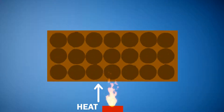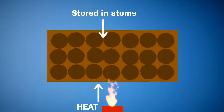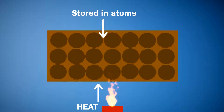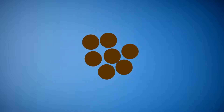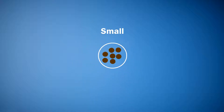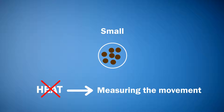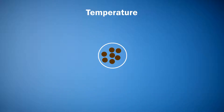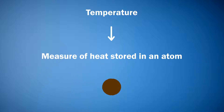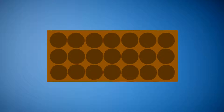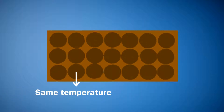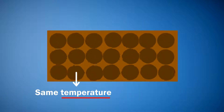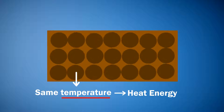When we add heat to an object, it gets stored in the form of movement of its atoms. Since atoms are very small, heat cannot be calculated by measuring the movement of individual atoms. We know that temperature is the measure of heat stored in an individual atom. In an object, all the atoms carry the same temperature, and by measuring temperature, we can measure the heat energy of the object.